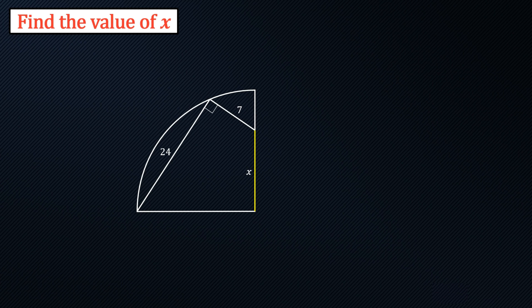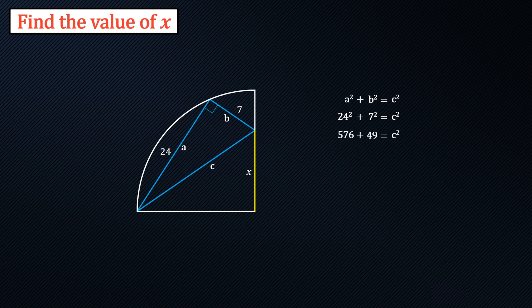First thing we can do is we can construct a right angle triangle and we can use Pythagoras to solve for the hypotenuse. So a squared plus b squared equals c squared where a is 24, b is 7, so that gives us 576 plus 49 which is 625. Take the square root, c is 25.